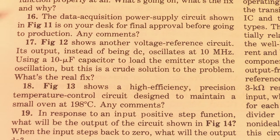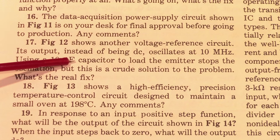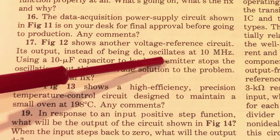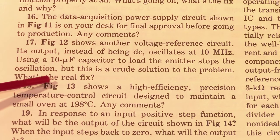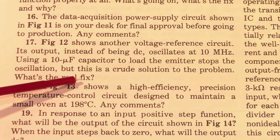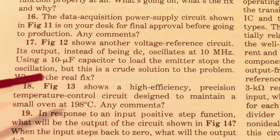Question 17 says that figure 12 shows another voltage reference circuit. Its output, however, instead of being DC, is oscillating at 10 MHz. Using a 10-mic capacitor to load the emitter stops the oscillation, but this is a crude solution to the problem. What's the real fix?